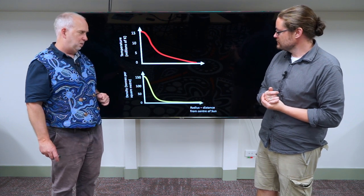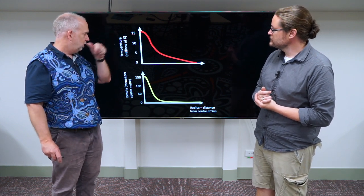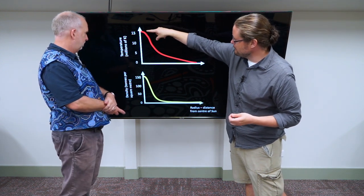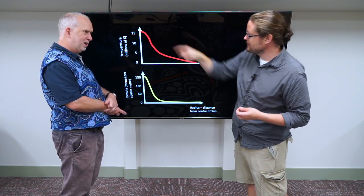And here's what it gives us. So this is what our current best models tell us, temperature as you go through the Sun. So really, really hot, 15 million Kelvin or so. A bit more, 15 million in the center, yes.